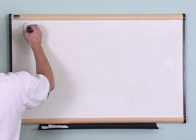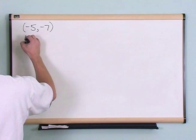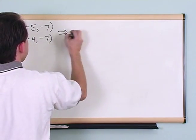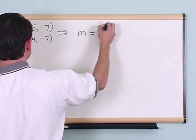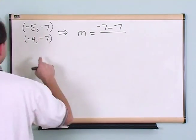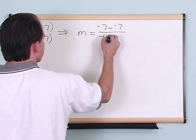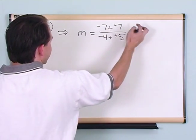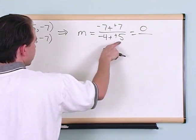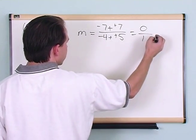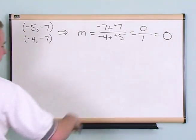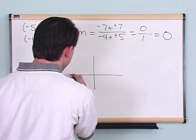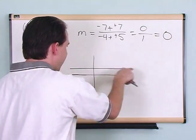Let's do one with more negative numbers for practice. Let's say we have (-5, -7) and (-4, -7). M equals negative 7 minus negative 7 over negative 4 minus negative 5. Subtracting a negative is like adding the opposite: negative 7 plus 7 is 0, and negative 4 plus 5 is 1. So 0 over 1 is just 0 — the slope is 0. And that makes sense: if the slope is 0, the line is completely flat.